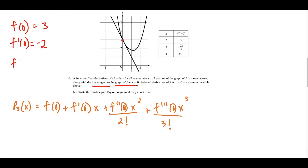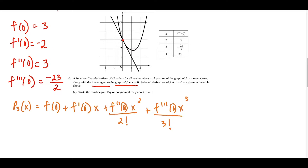For the last two values, f double prime of 0 we get from the table. n equals 2 corresponds to the second derivative, and the second derivative at 0 is equal to 3. And f triple prime of 0 corresponds to n equals 3, and the third derivative at 0 is negative 23 over 2. From here we just plug all of this into the polynomial.